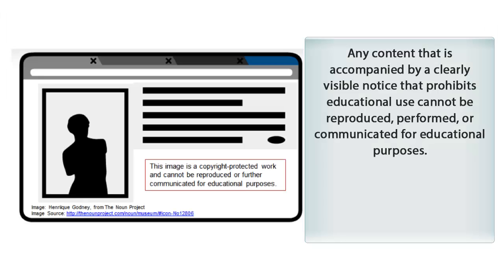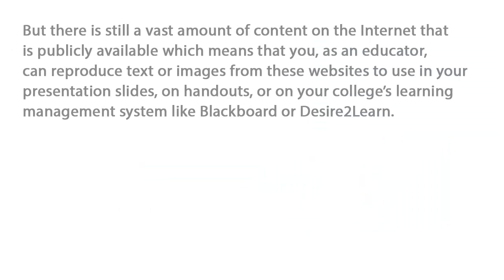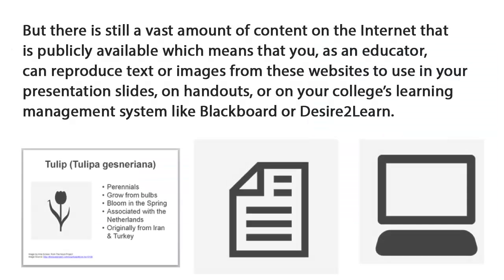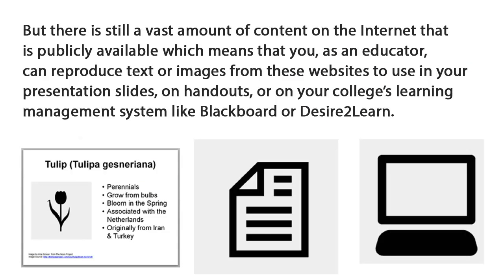What else? Any content that is accompanied by a clearly visible notice that prohibits educational use cannot be reproduced, performed, or communicated for educational purposes. But there is still a vast amount of content on the Internet that's publicly available.